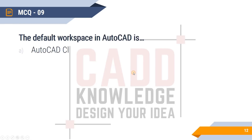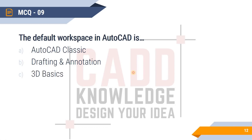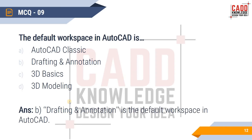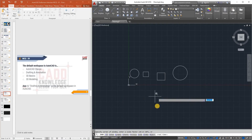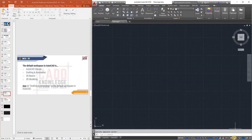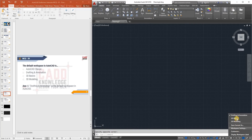MCQ 9: What is the default workspace in AutoCAD? Options are AutoCAD Classic, Drafting and Annotation, 3D Basics, and 3D Modeling. The answer is Drafting and Annotation. You can verify this by clicking the workspace switcher in the AutoCAD interface, where Drafting and Annotation is shown as the default.